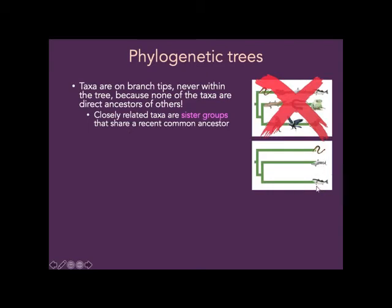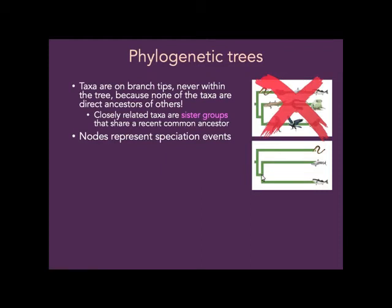If you have two species more closely related to each other than anyone else, we say they're sister groups and they share a recent common ancestor. The nodes represent speciation events. Name two ways you can have a speciation event — sympatric speciation and allopatric speciation. So speciation with or without a geographic barrier.